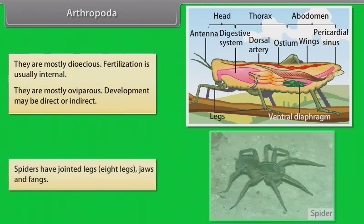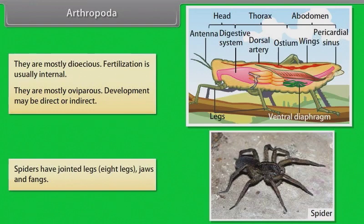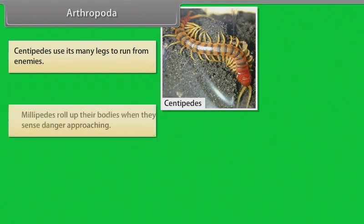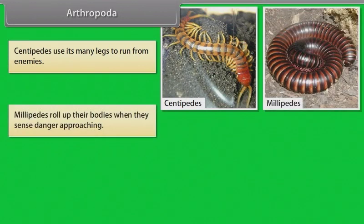Spiders have jointed legs — eight legs — along with jaws and fangs. Centipedes use their many legs to run from enemies. Millipedes roll up their bodies when they sense danger approaching.